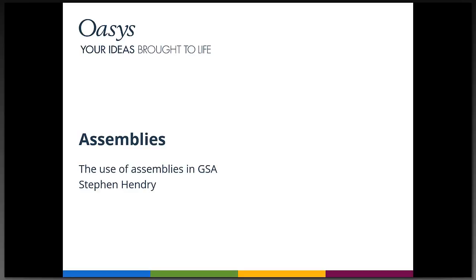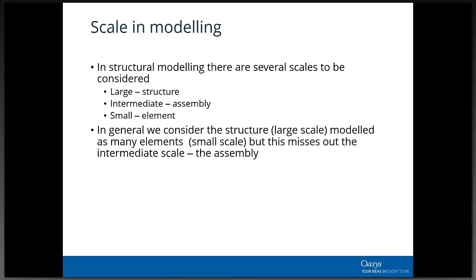What we're going to look at now are assemblies in GSA - what they are, how we use them, and what they're useful for. When modeling, we have a large scale (the whole structure) and a small scale (lots of small elements). Very often we're interested in results at an intermediate level, not readily accessible from normal analysis results. The assembly is something introduced to span between those large and small scales.